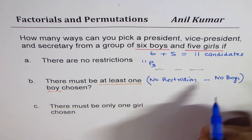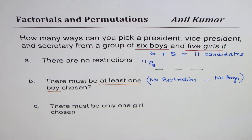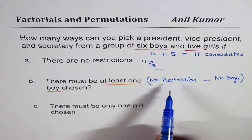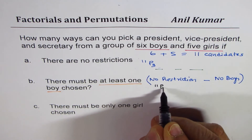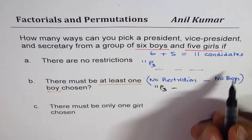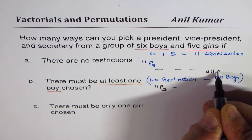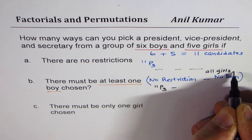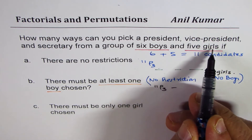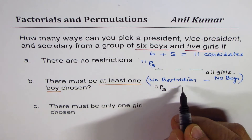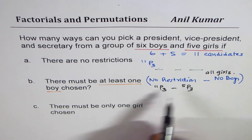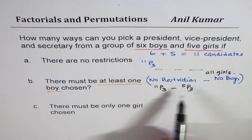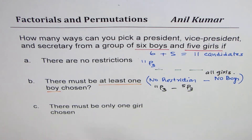No boys means all girls. Total is 11P3, take away all girls. There are five girls and we are choosing three, so that is 5P3. The answer for condition B is 11P3 minus 5P3. You would always use a calculator to compute these values.